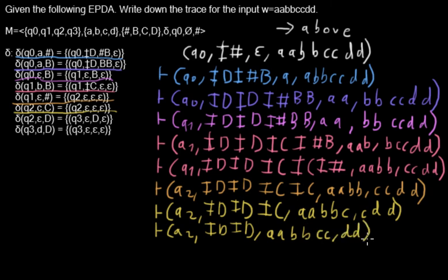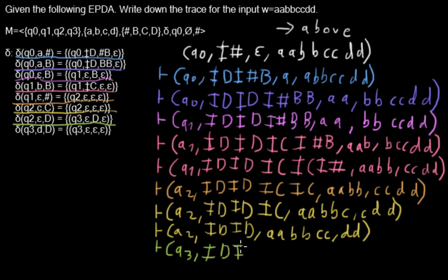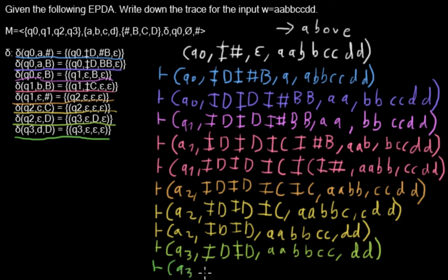Then I can use this transition where I move to Q3. I read the d from my stack and immediately put it back, so nothing changes. Now I can use the next transition — staying in Q3, I copy one of those d stacks. The transition tells me to consume one d from the input string and one d from the stack, so the stack which has nothing left on it is completely removed. Now I've read one of the d's.